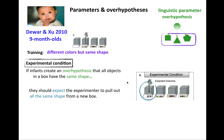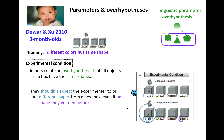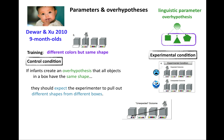If infants have formed that over hypothesis, here's what we should expect: if you reach into a new box and pull out two things that are the same shape — a shape you've never seen before, like stars — that fits the over hypothesis and should be unsurprising. But if you reach into the same box and pull out different shapes — a star and then a circle — that violates the over hypothesis and should be really surprising.